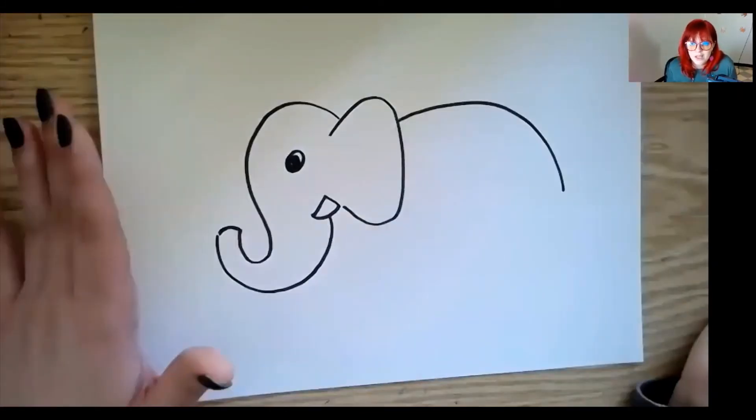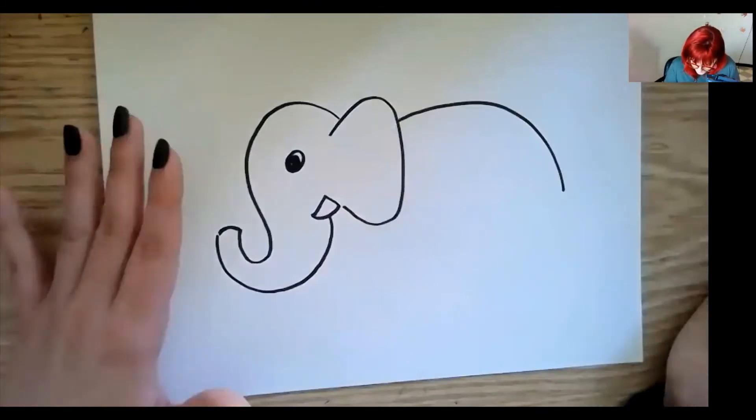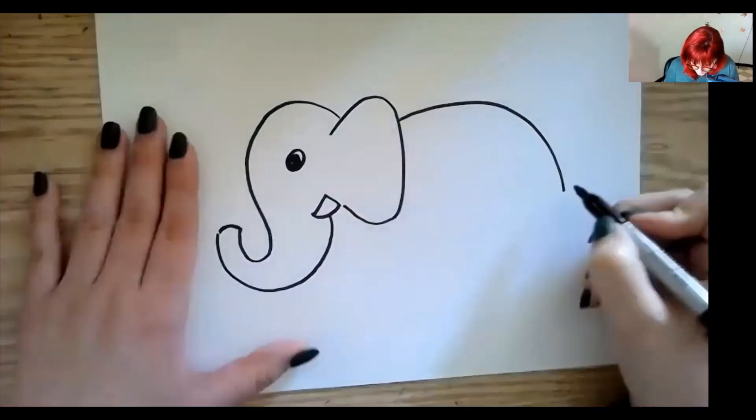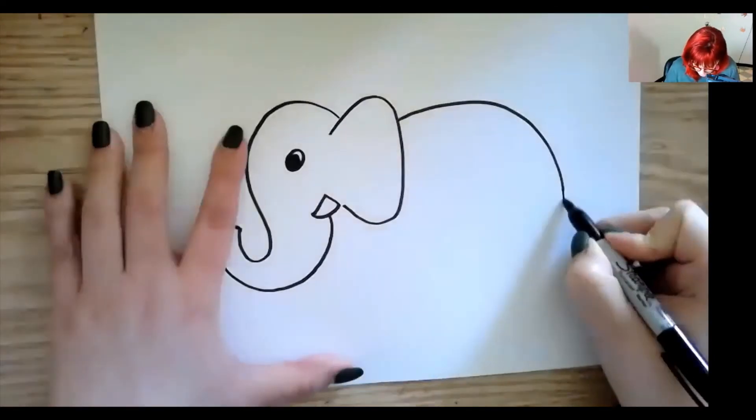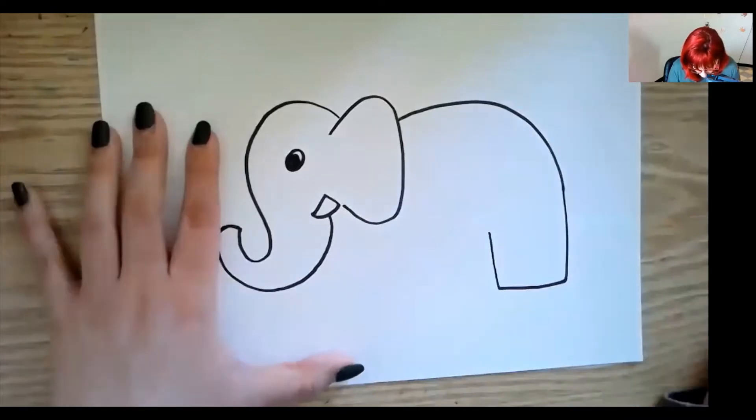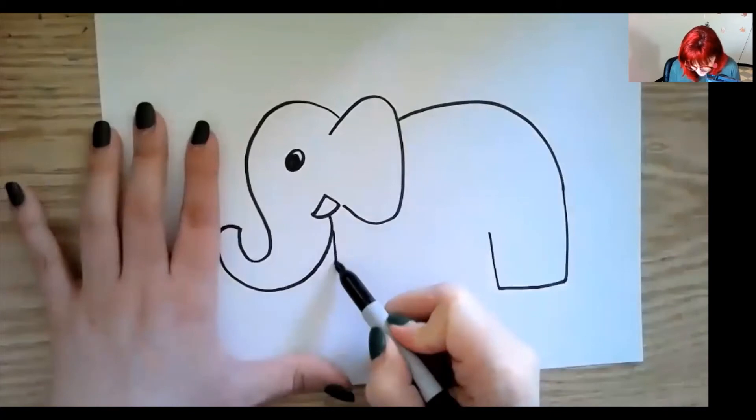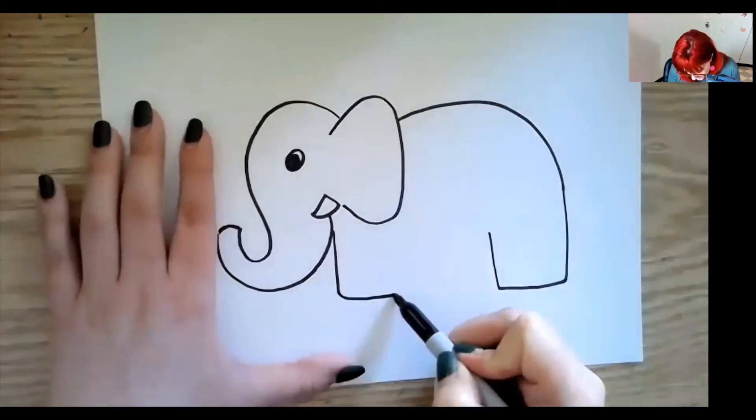And elephants also have really thick and large legs. So I'm going to go from the bottom, down, over, up. And if I go back over by the head, it's going to be the same thing where I go down, over, up. And all that's left in the middle is his tummy.